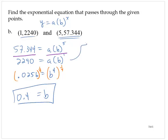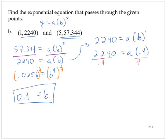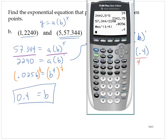Now let me use that in my second equation. 2240 equals a times b to the first. So 2240 equals a times 0.4 to the first, which is just 0.4. Divide through by the 0.4 on both sides. 2240 divided by 0.4 is 5600.